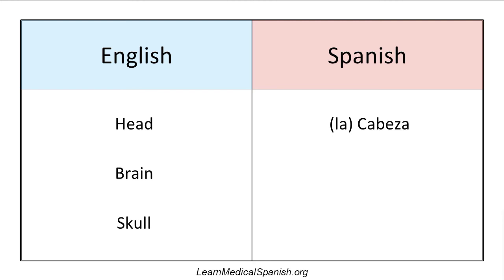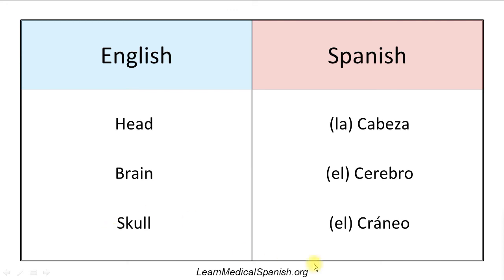Next: brain. El cerebro. El cerebro. Skull. El cráneo. El cráneo. There will be a lot of words like that that are cognates, meaning they sound kind of similar in English and Spanish. In this case, it sounds like cranium, as opposed to skull. So a lot of times it'll sound similar to a synonym — that's really a super common thing you run into when you're learning Spanish.